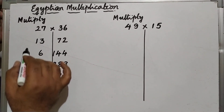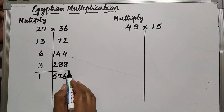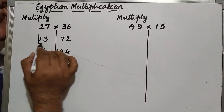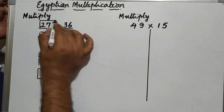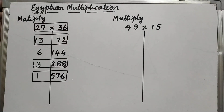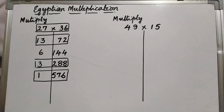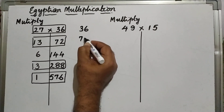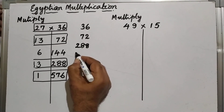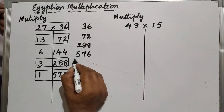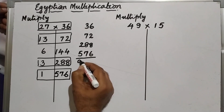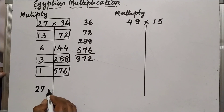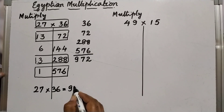Now we will find out the odd numbers from column number 1. The odd numbers are 27, 13, 3, and 1. Corresponding to these odd numbers, the values in column number 2 are 36, 72, 288, and 576. If I add all of those, I get 972. And the product of 27 and 36 is indeed 972.